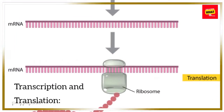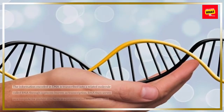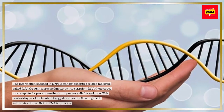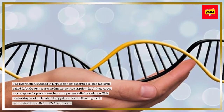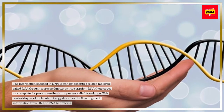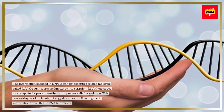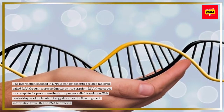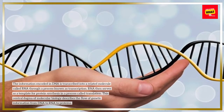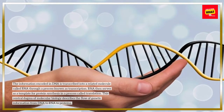Transcription and translation: the information encoded in DNA is transcribed into a related molecule called RNA through a process known as transcription. DNA then serves as a template for protein synthesis in a process called translation. This central dogma of molecular biology describes the flow of genetic information from DNA to RNA to proteins.